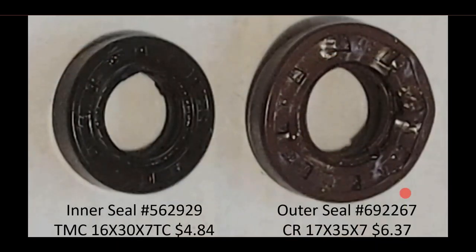The inner and outer seal is not a problem to acquire. They can be found at just about any store that sells bearings and seals. They are $4.84 and $6.37. The part number is basically the dimensions of the seal. In case of the inner seal, it's 16 millimeters by 30 millimeters by 7 millimeters. The outer seal is 17 millimeters by 35 millimeters by 7 millimeters. Pretty simple, but I also have the bearing numbers right there in case you need that.